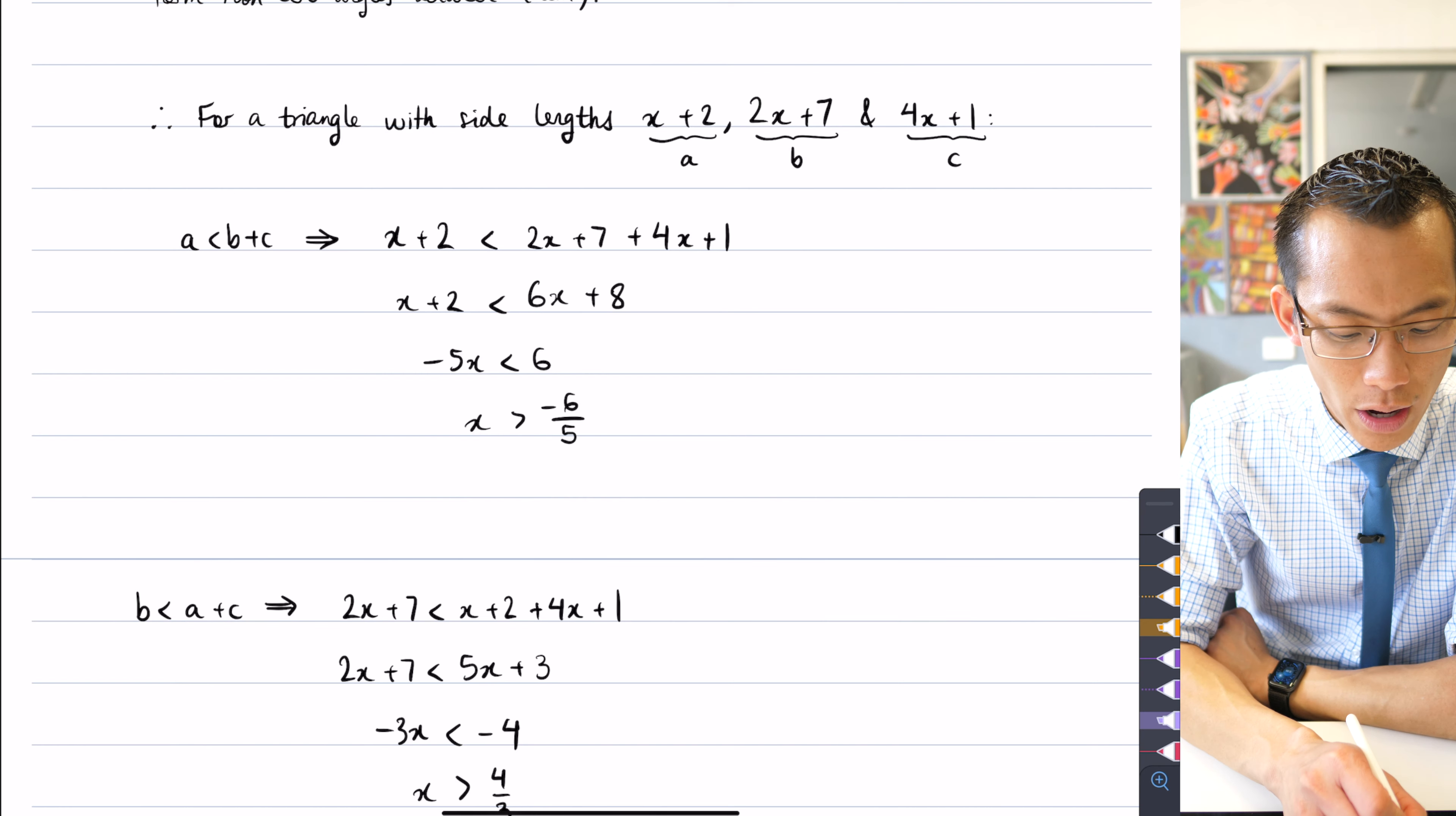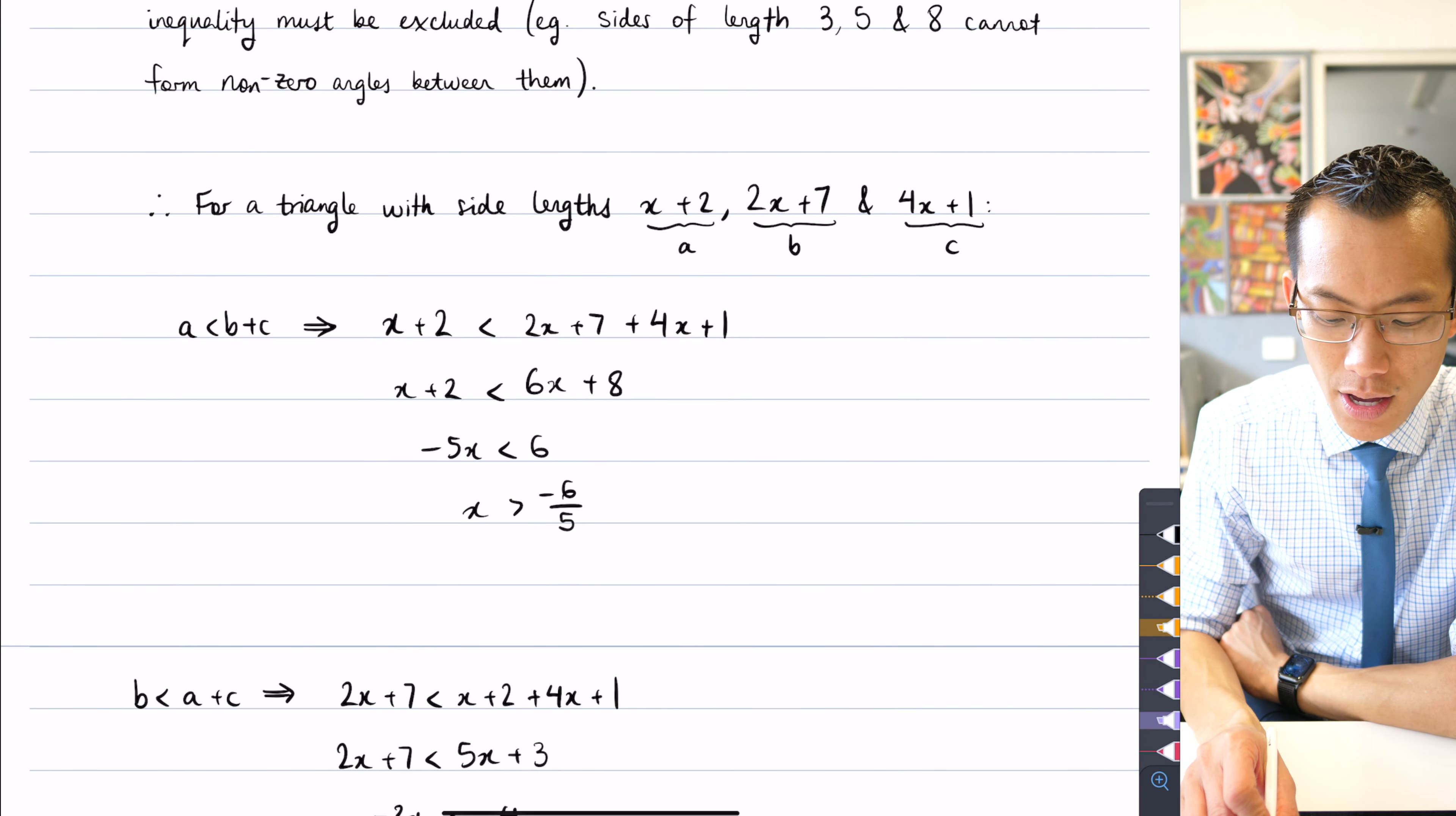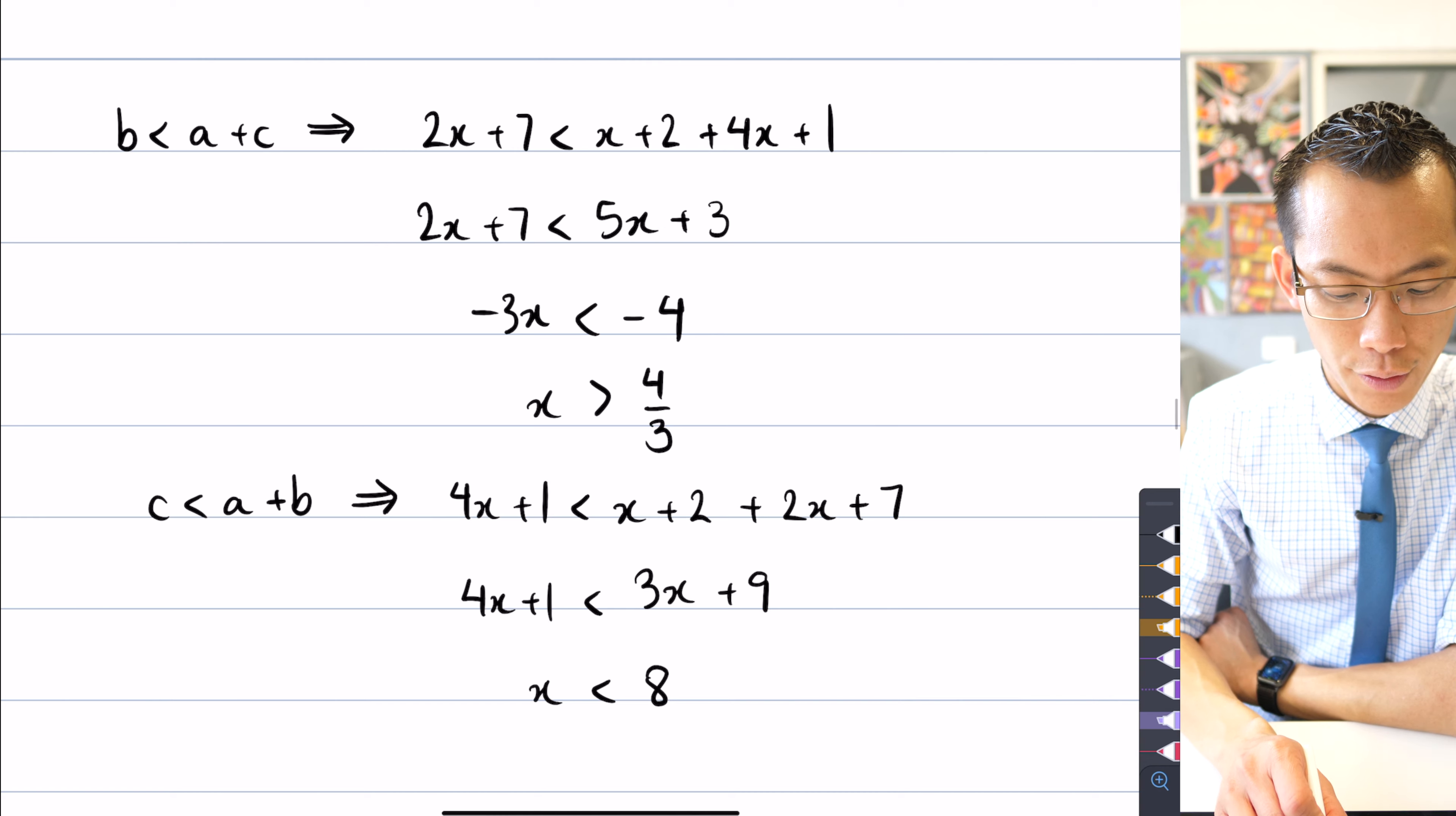Now I then have to start thinking about, let's have a look at each of the sides and how they relate. So here is me saying, let's call them a, b, and c. a has to be less than these two added together, so I can put that in, and then just work out the inequality. So x is greater than negative 6 on 5. Well that's true, but I sort of already knew that, because you can see this side here is x plus 2, so it's going to have to be bigger than negative 2. So this is telling me something that was kind of already established.